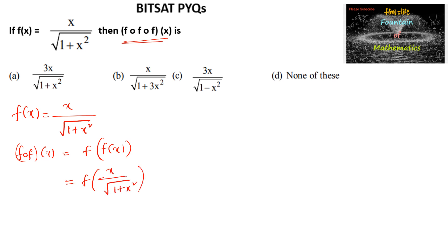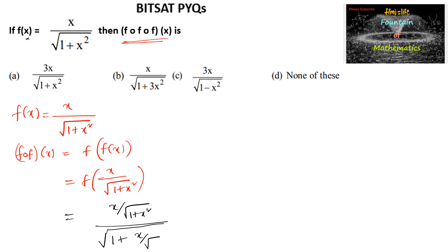Now we need to replace x with x upon root of 1 plus x square. So we can write x upon root of 1 plus x square divided by under root of 1 plus x upon root of 1 plus x square, whole square.